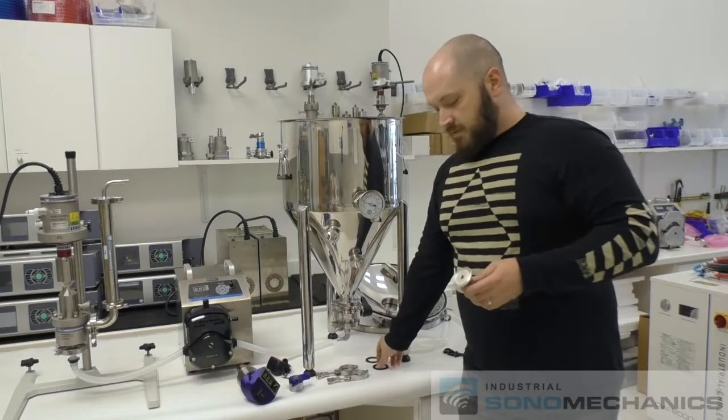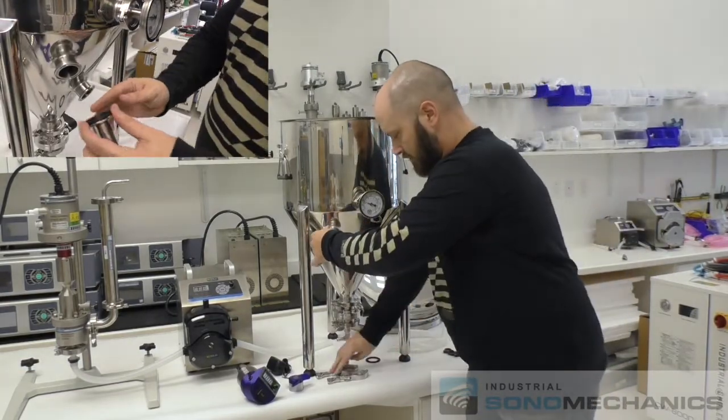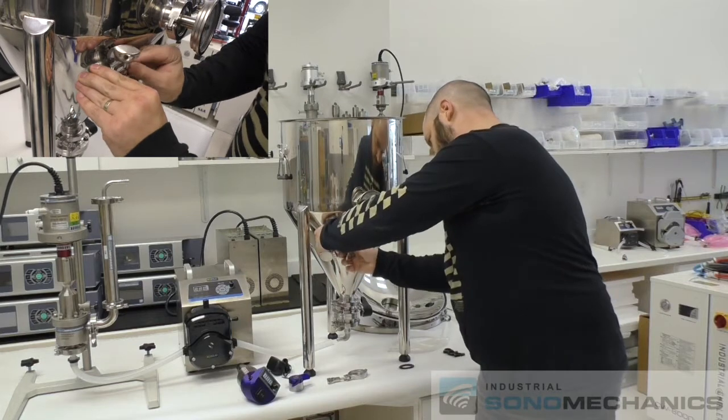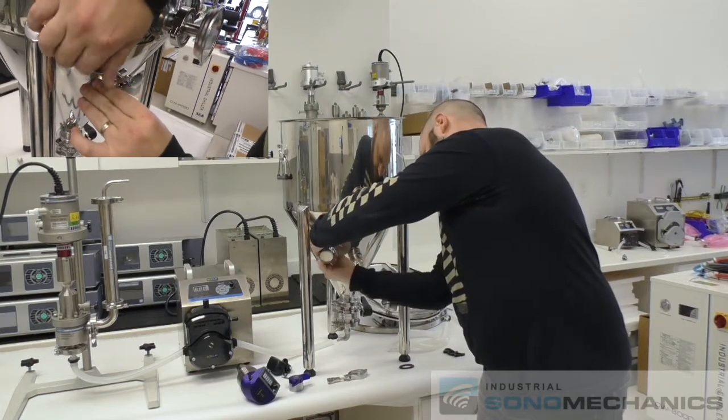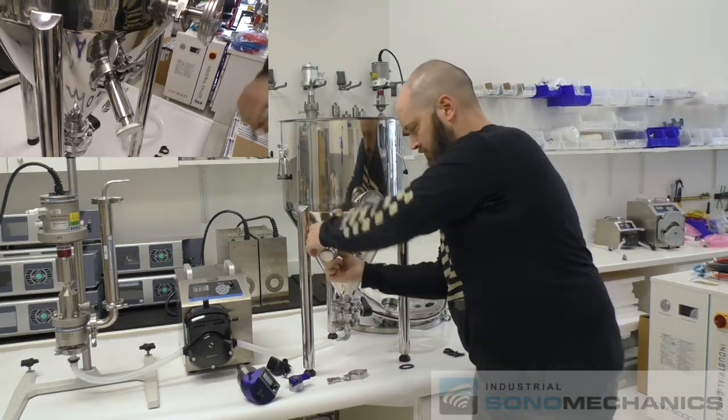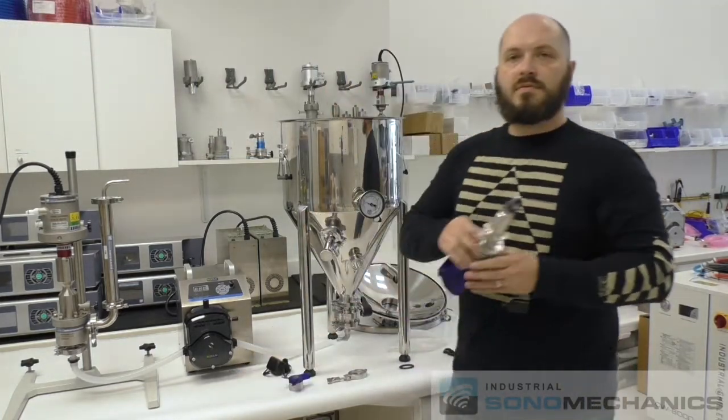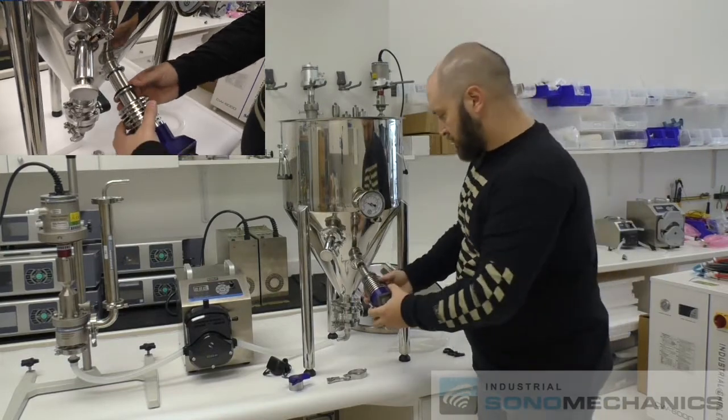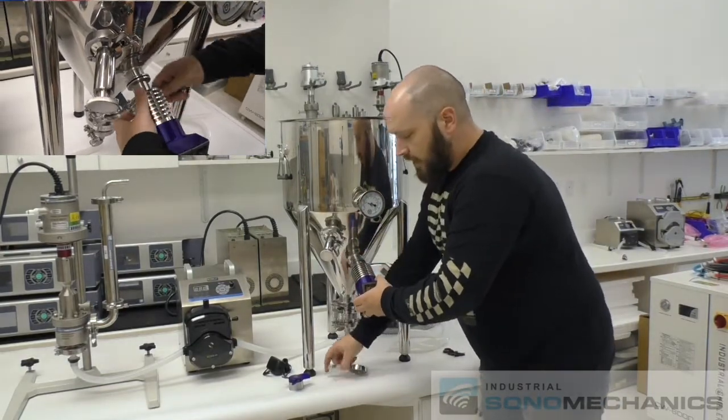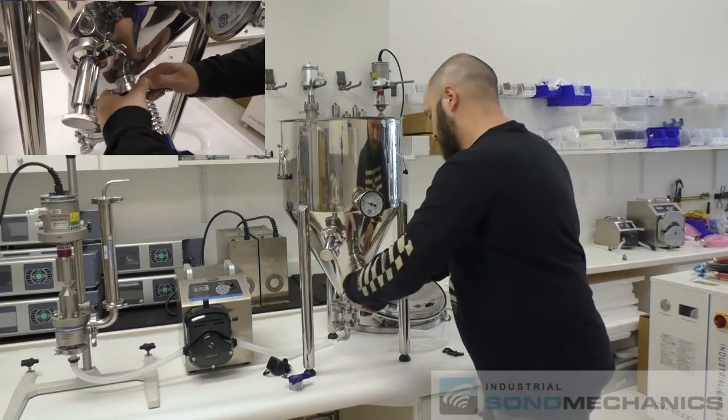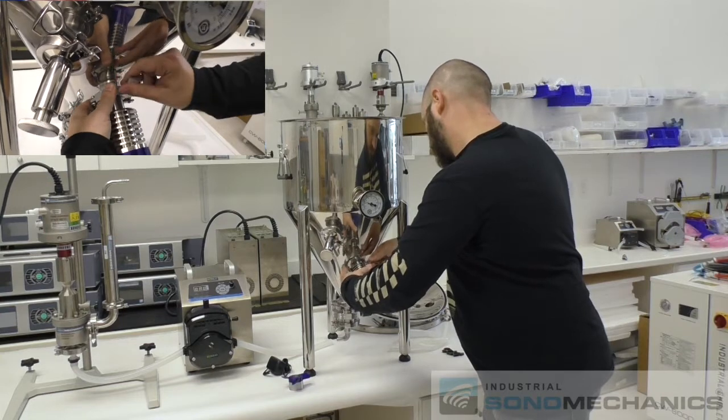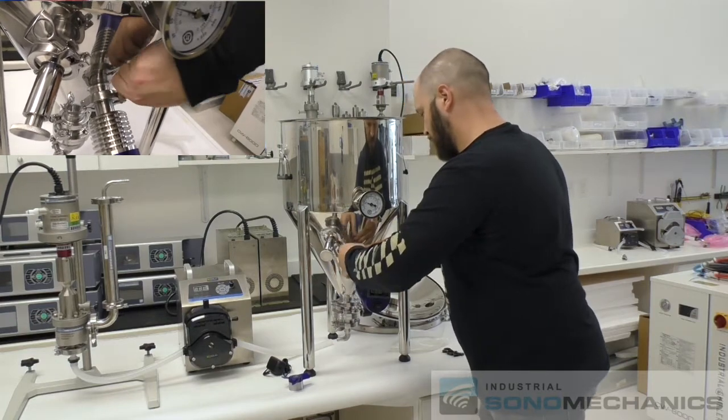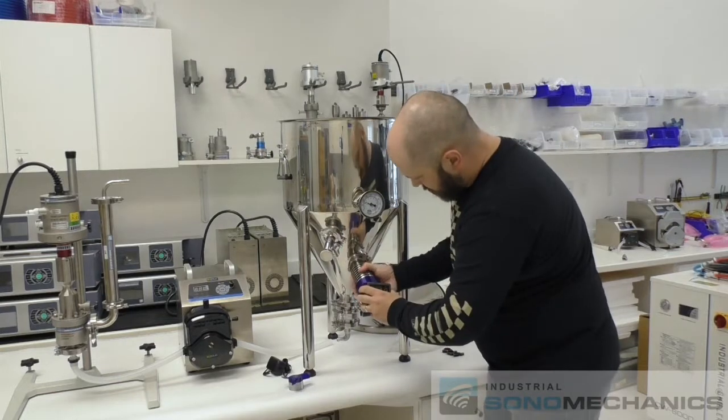Then we have the sampling valve, again with a gasket, valve clamp, then we have the mixer body, again with a sanitary gasket, we insert it, and for this part you might want to have someone holding the mixer for you. We'll line it up.